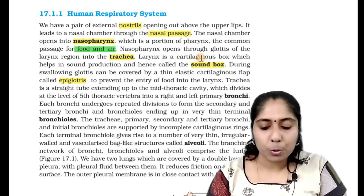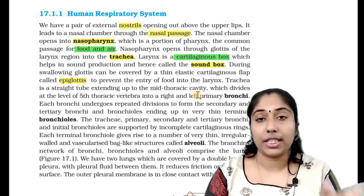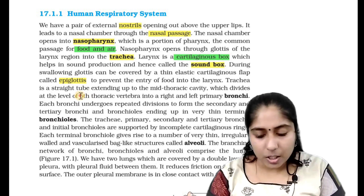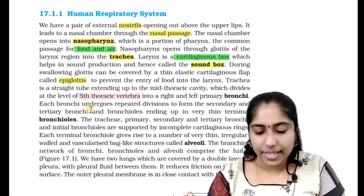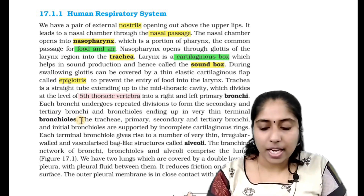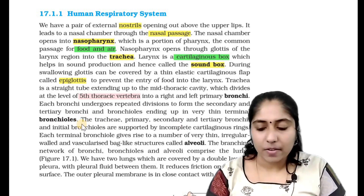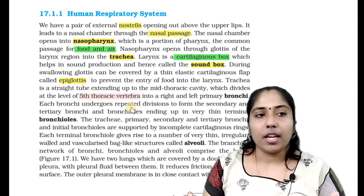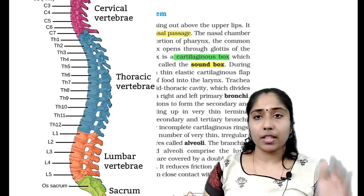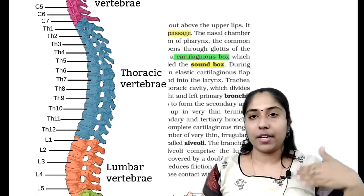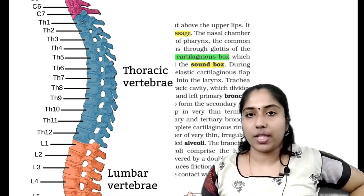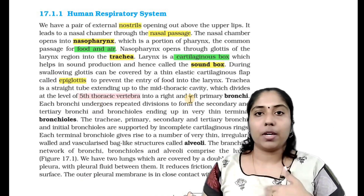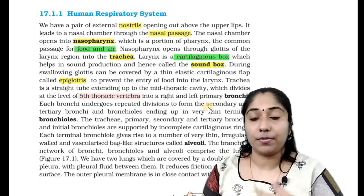Trachea is a straight tube extending up to the mid-thoracic cavity, which divides at the 5th thoracic vertebrae into right and left primary bronchi. Let's take a picture of your vertebrae. We have cervical vertebrae, thoracic vertebrae, and lumbar sacral. At the 5th thoracic vertebrae, the trachea stops and divides into right primary bronchi and left primary bronchi.